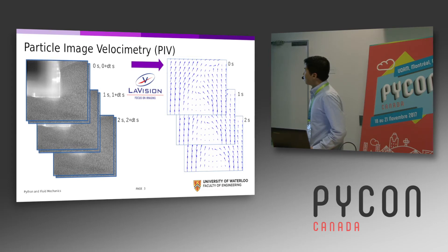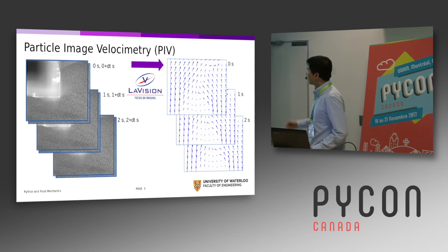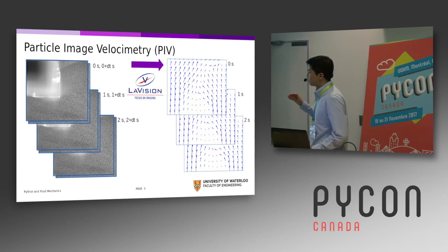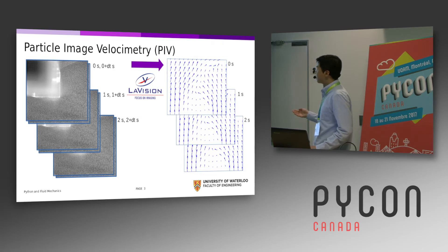The result of PIV is basically a set of vector fields, like on the right side here. The end result gets you all of these velocity vectors at different points in space and different points in time.